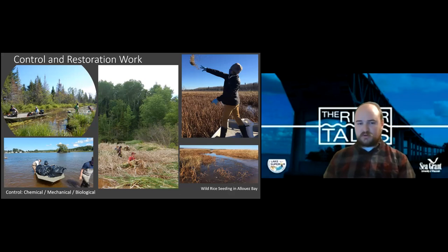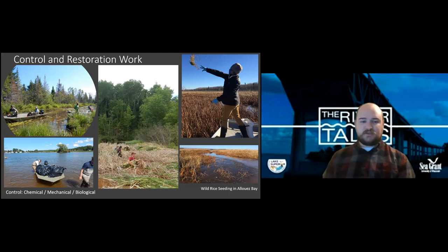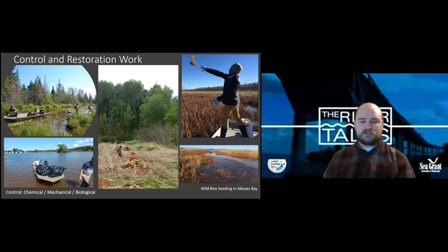So we want to do restoration work on top of any control. Wild rice makes an excellent restoration plant because it's annual, fast growing, and tends to be pretty nutrient tolerant to some degree. This can also take the form of bringing in native species plugs of vegetation already at the location, just bringing it into the site and filling in the gaps that have been disturbed by any control work we've done.